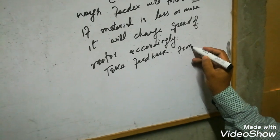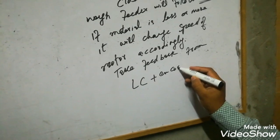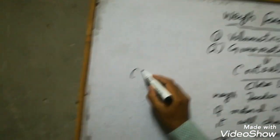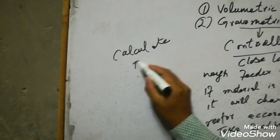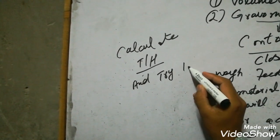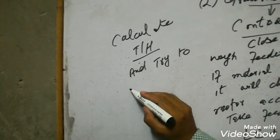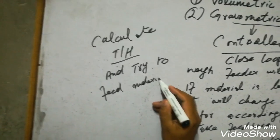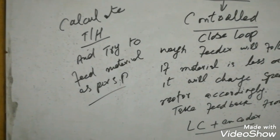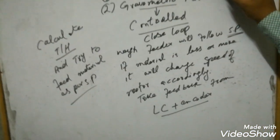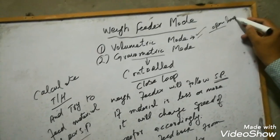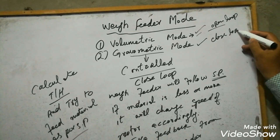In gravimetric mode, the controller takes feedback from the load cell and encoder, calculates the ton per hour, matches the set point with the feedback, and accordingly gives the set point to the VFD to control the material. The wave feeder will try its best to meet the set point of the operator. So volumetric mode is used only for calibration — tare and zero calibration — and in normal running we run the wave feeder in gravimetric mode. Volumetric mode is open loop and gravimetric mode is closed loop.